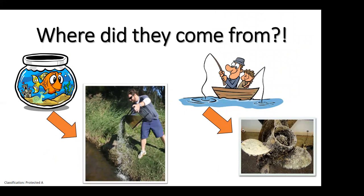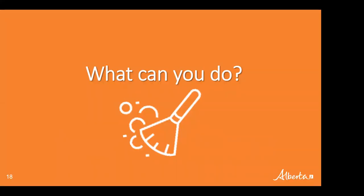So where do these species come from? The main ways we're seeing invasive species enter the province are through people dumping their pet fish tanks — sometimes for cultural reasons — or species sticking to boats and gear we use outdoors. In one photo, someone is shown dumping a fish tank into a natural water body. In another photo, a boat propeller covered with mussels was stopped at the Alberta border before entering our water bodies.